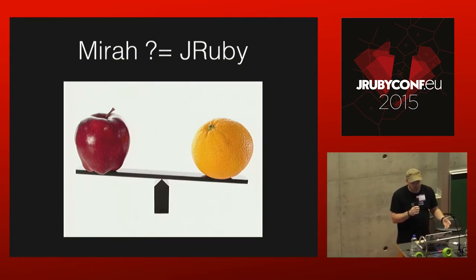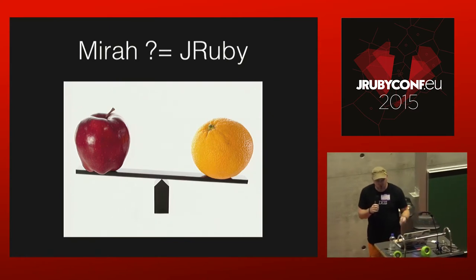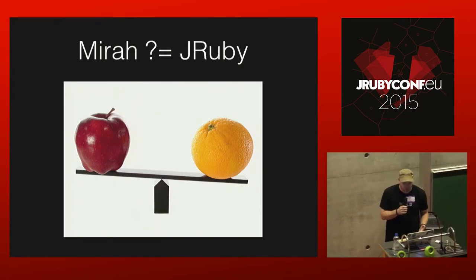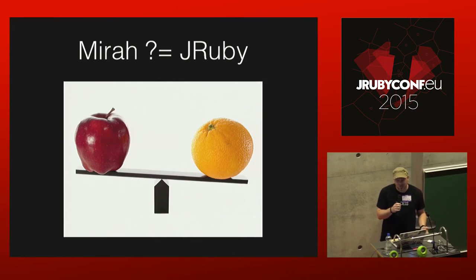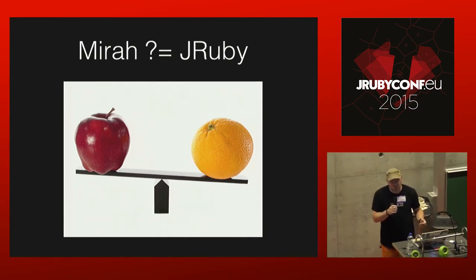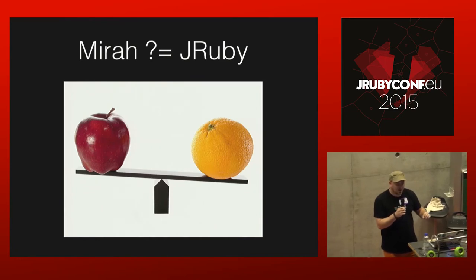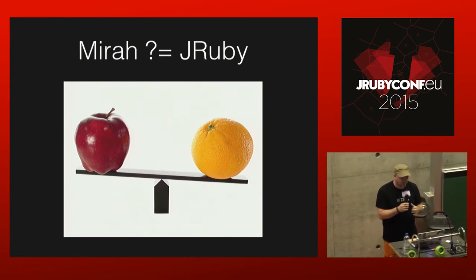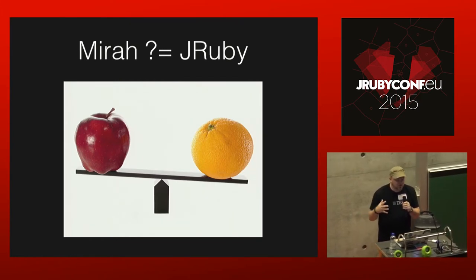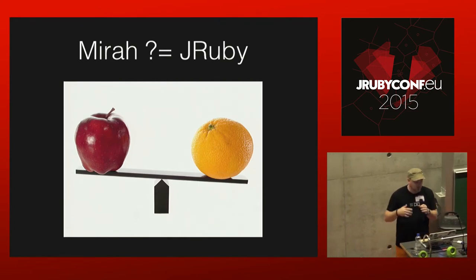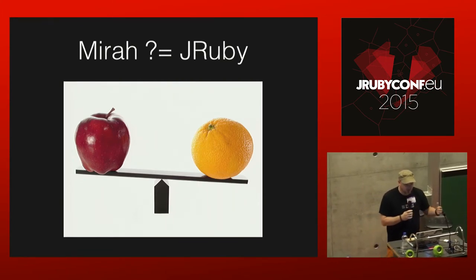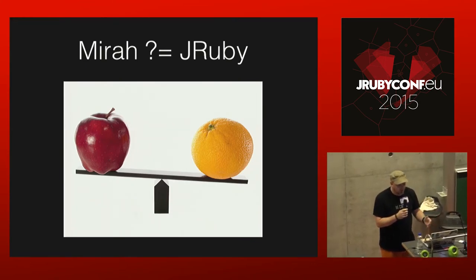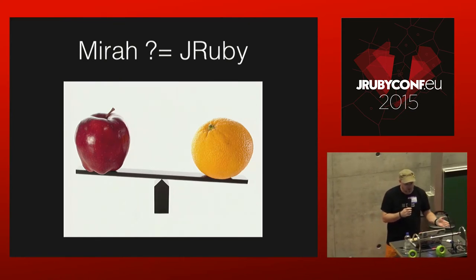So Mirah and JRuby — the main difference here is kind of the approach. Mirah is super lightweight. There's no runtime library. It maximizes performance. When you do performance tests on it, it seems really fast, but it also has limited capabilities thus far. JRuby is so much more mature than Mirah — it's widely used, there's a huge community, there's a lot of support for it. Mirah is kind of a fledgling language, still just getting off and starting to run.